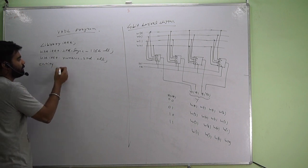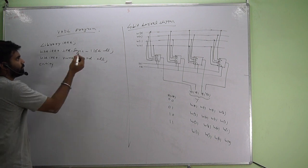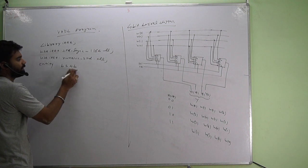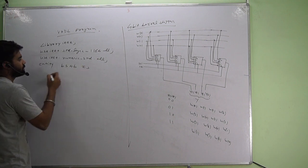Okay, entity. Name it entity, let it be barrel shifter, so bs 4b for 4 bit barrel shifter is port.